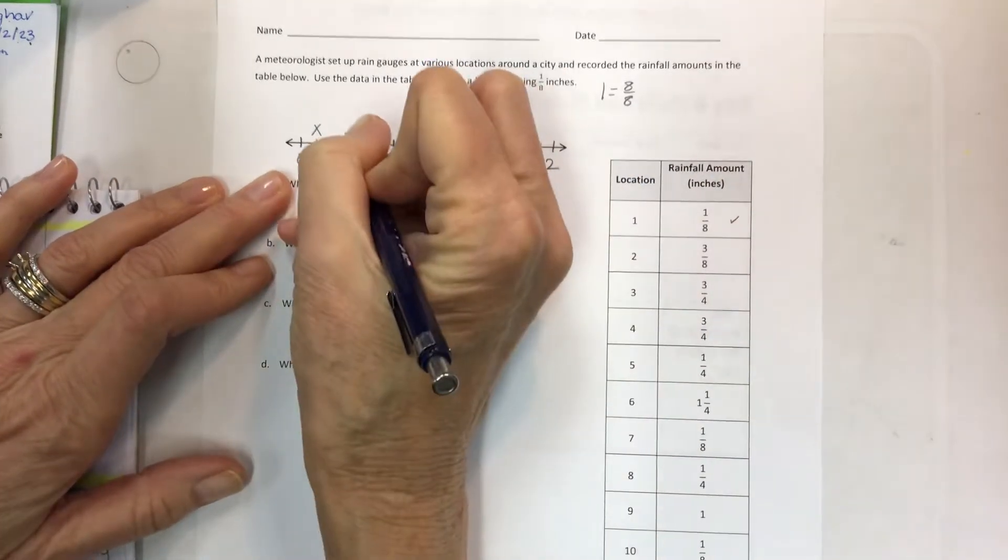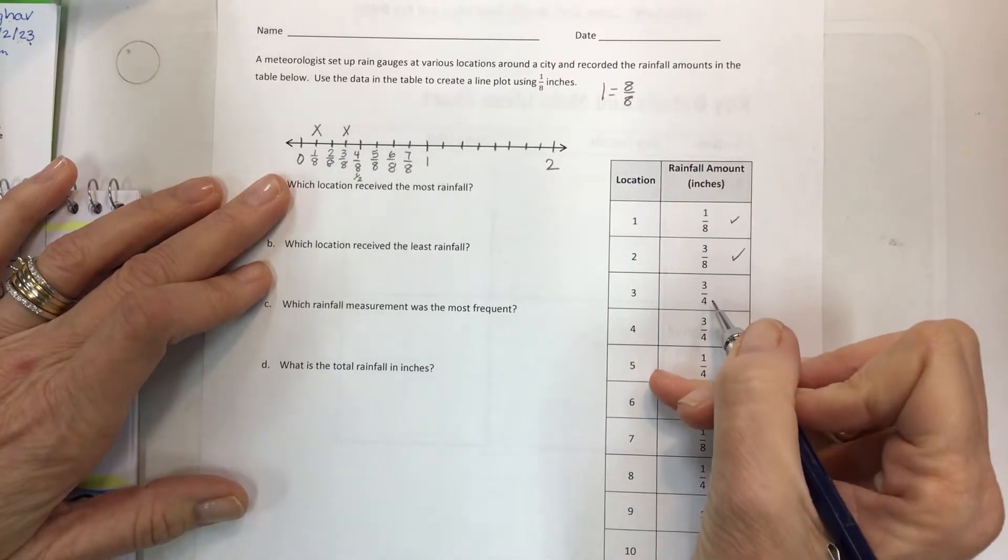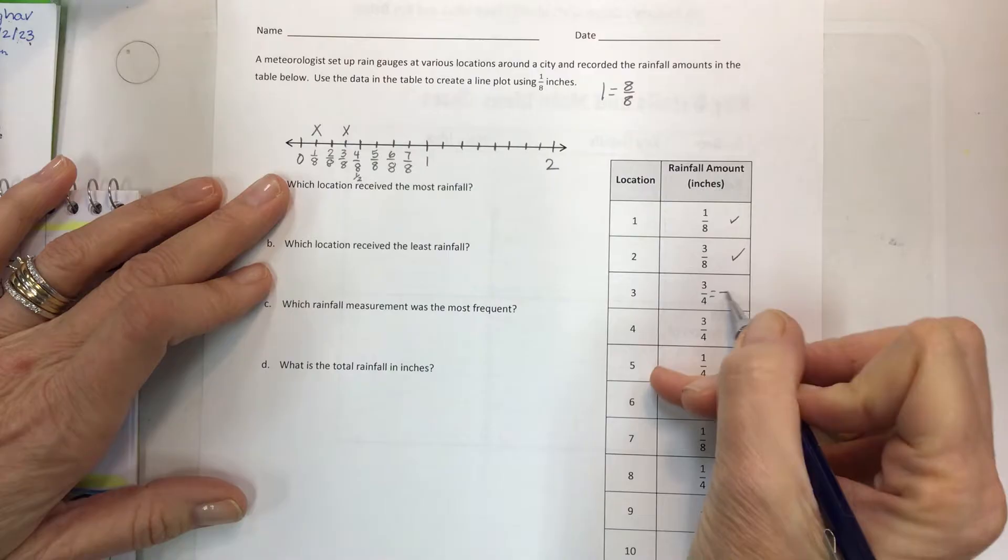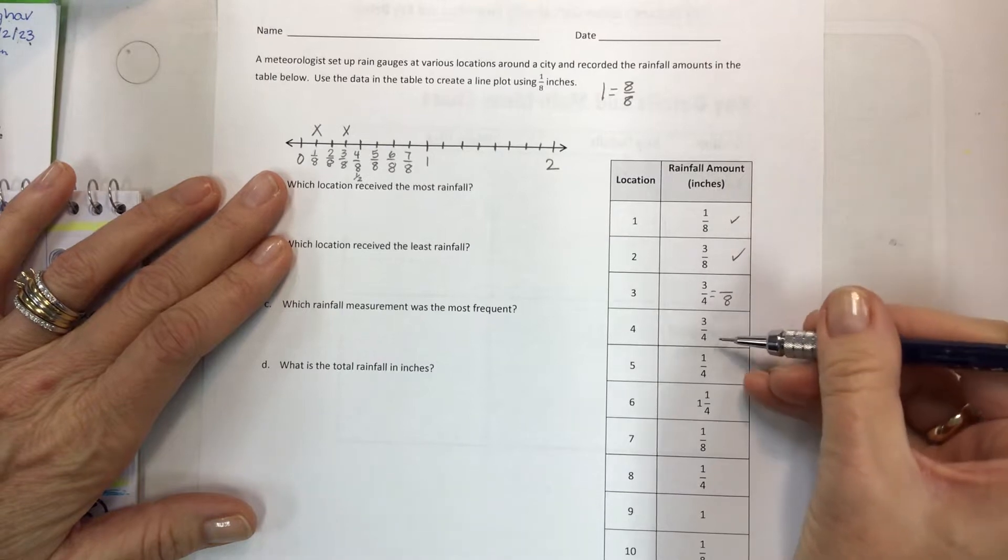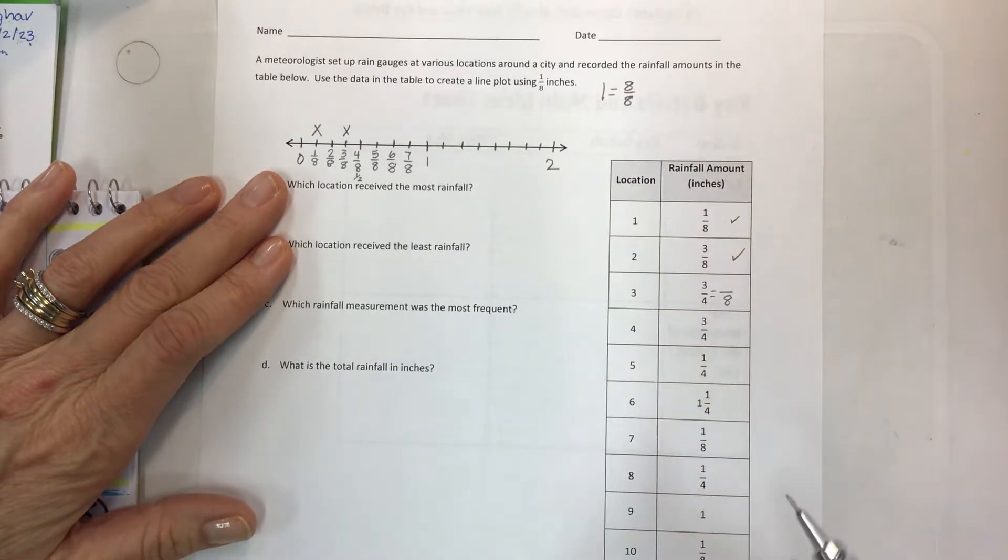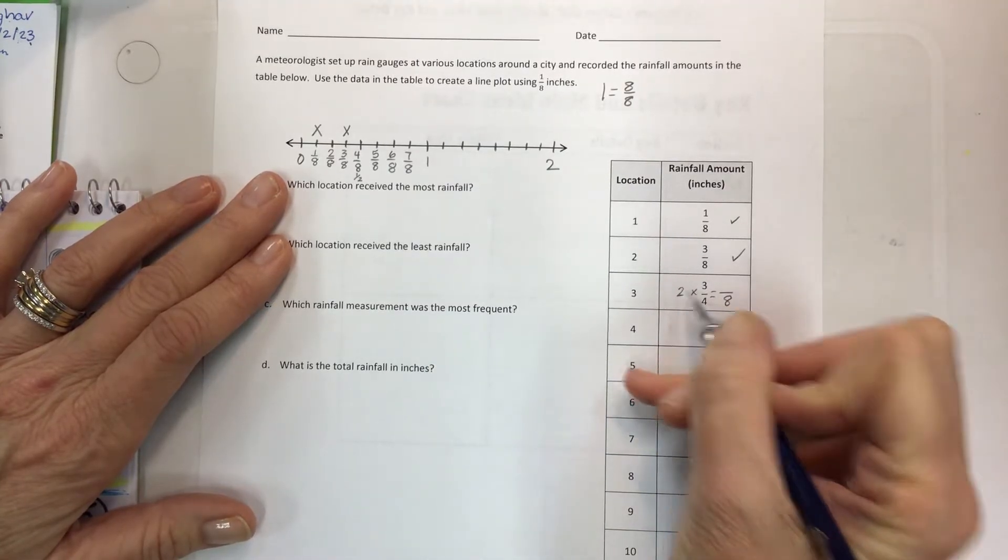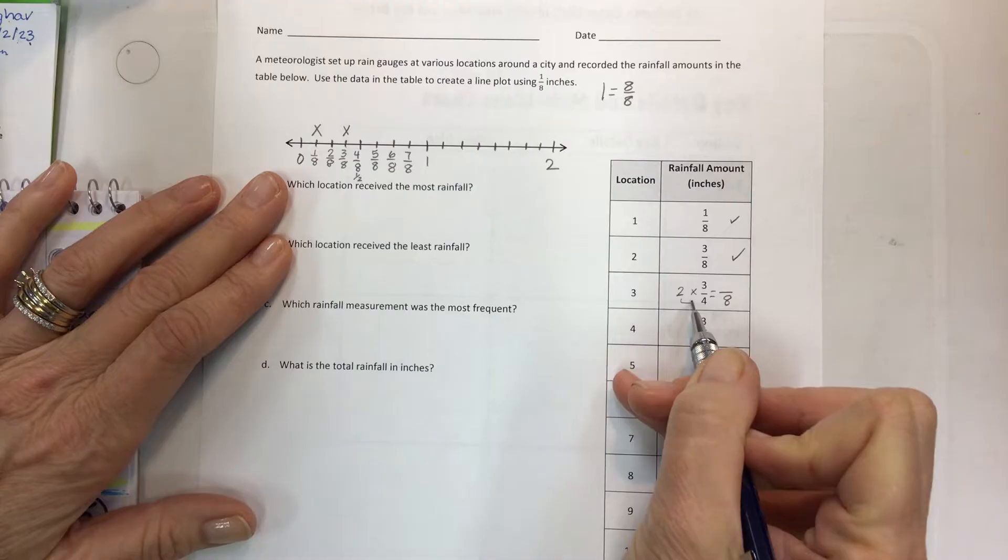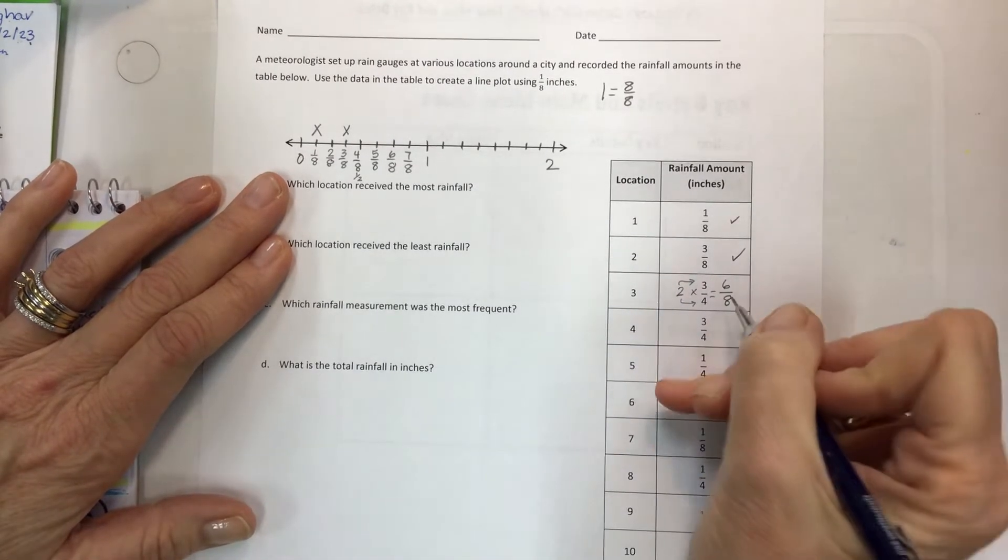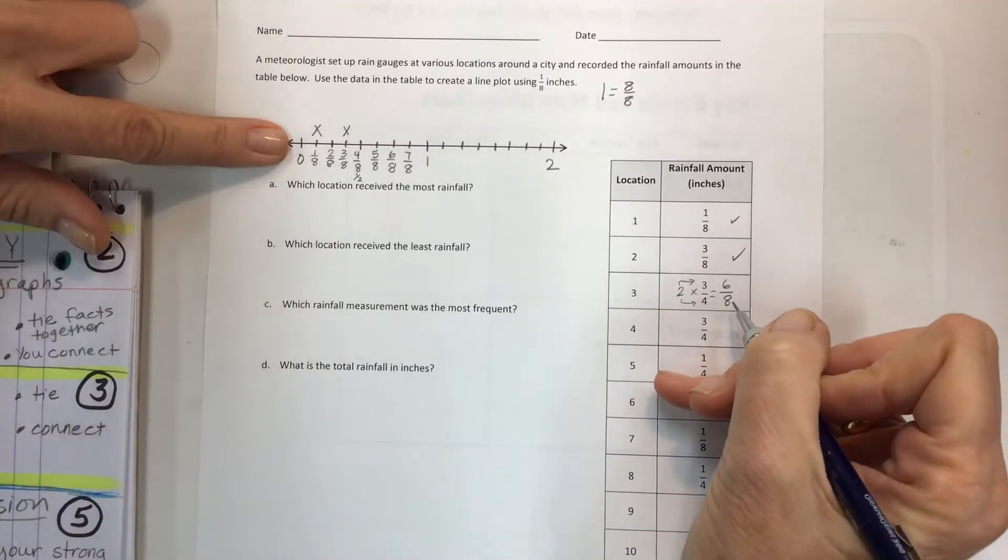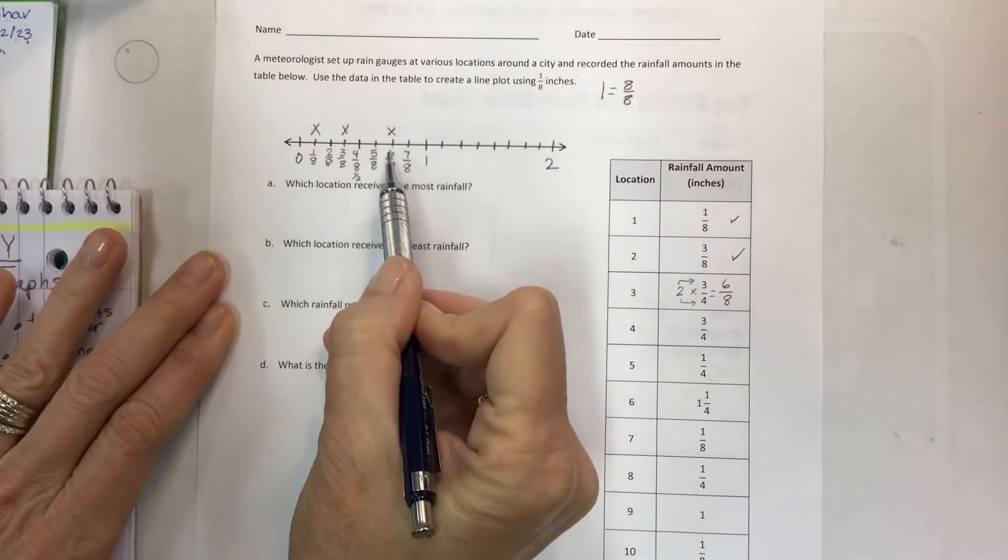I plotted that one, now I have 3 eighths and I have one location that has 3 eighths. Then I go to location 3 and I have 3 fourths. And you go, oh man, my chart is in eighths. That's okay. Make an equivalent fraction out of all of these so that any denominator that is not 8, you can easily turn it into 8. Use a scale factor. How do I get from 4 to 8? I multiply by 2. 2 times 3 is 6. So you're going to take location 3 and put this on your line plot at 6 eighths, which is equivalent to 3 fourths.